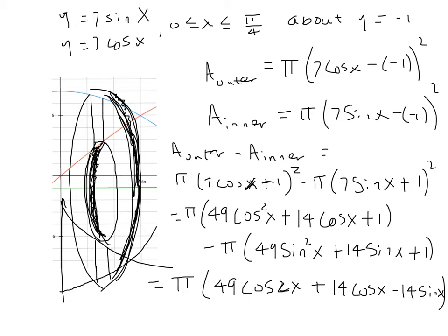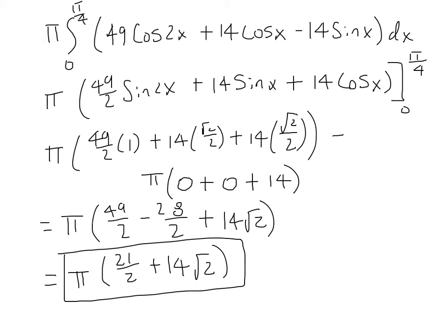Now we collect terms. Factoring out pi, we have 49 cos²x minus 49 sin²x, which we factor as 49(cos²x - sin²x). We know that equals 49 cosine 2x. The 1 minus 1 terms cancel, leaving us with 49 cosine 2x plus 14 cosine x minus 14 sine x. So our integral will be pi times the integral from 0 to π/4 of that expression dx.